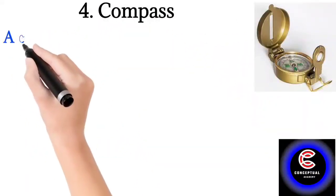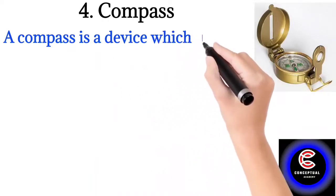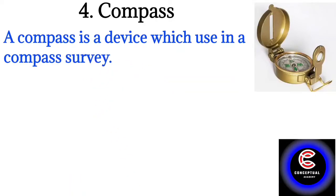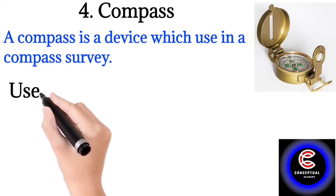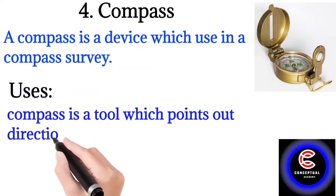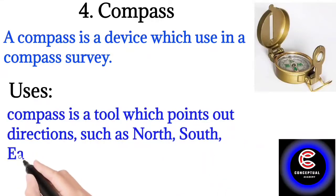Instrument number four: Compass. A compass is a device which is used in compass surveys. Uses of compass: Compass is an instrument used for determining directions such as north, south, east, and west.